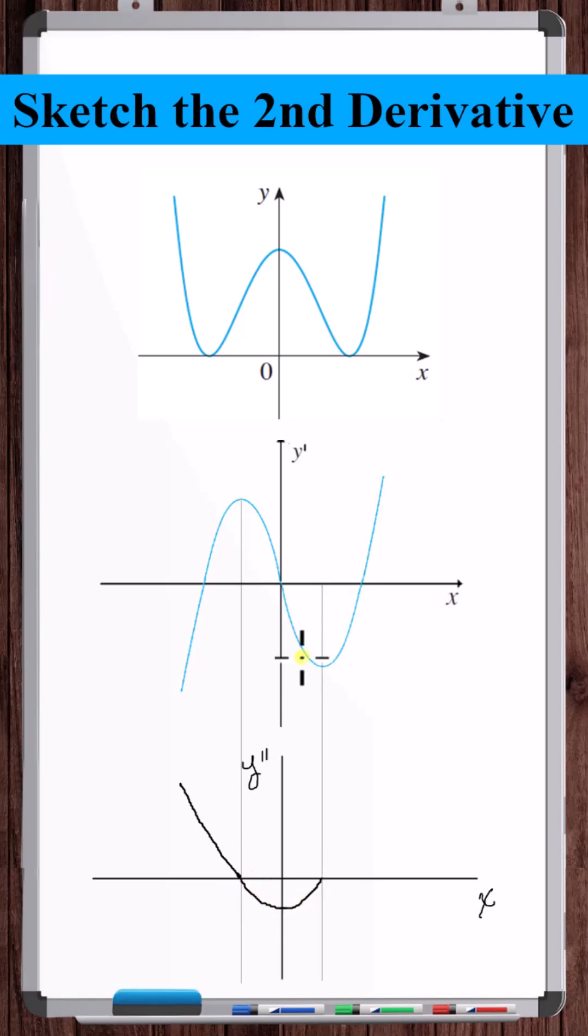The slope switches from negative to positive here. And then as x approaches infinity, the slope approaches positive infinity.